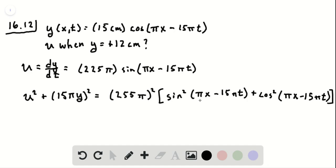And we know that sine squared of something plus cosine squared of that same thing is just 1. So if we then just solve this for u,